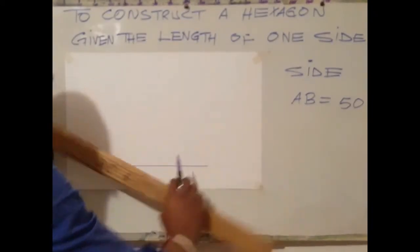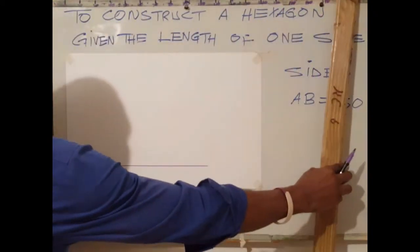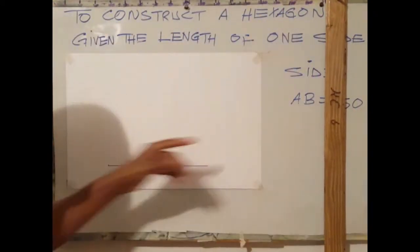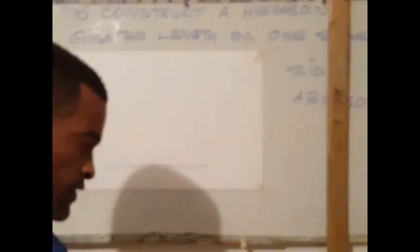From this line, measure the length of one side, AB, which is 50 millimeters.